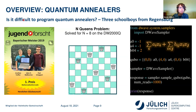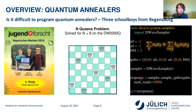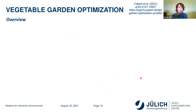So is it actually difficult to program quantum annealers? I always like to show results that three schoolboys from Regensburg scored under our guidance. They solved, in 2019, the N-queens problem for eight queens on the D-Wave 2000Q — the problem of placing eight queens on an 8x8 chessboard so that no queen attacks another queen — and they scored first prize in Jugend Forscht. Everything is Python nowadays: you specify the A's and B's — the biases and couplers — in a Python dictionary and pass it to the D-Wave library with the number of solutions you want. We see all of these solutions simultaneously.